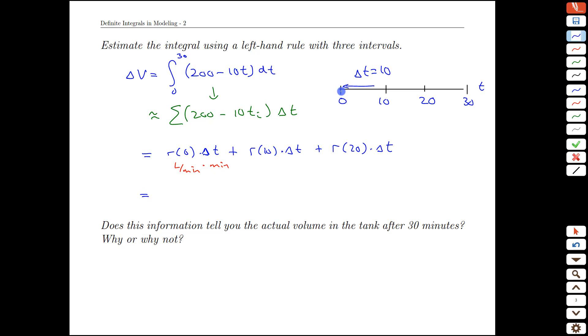And then we can fill in the values. Our rate function is just this part here, R of T. So literally we say, hey, what was the rate of flow at time 0? Well, it was 200 minus 0, that was 200.